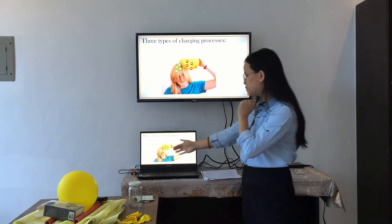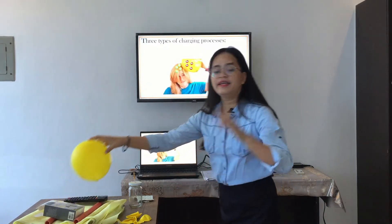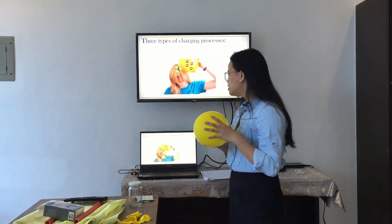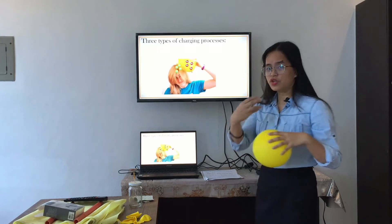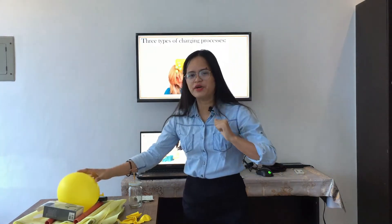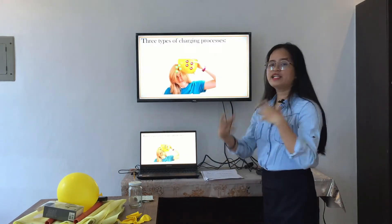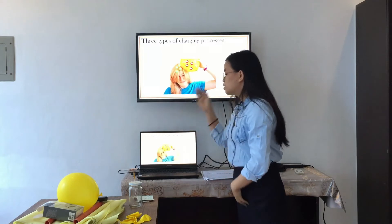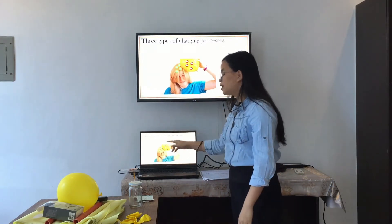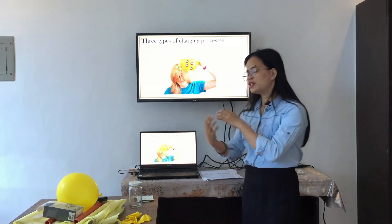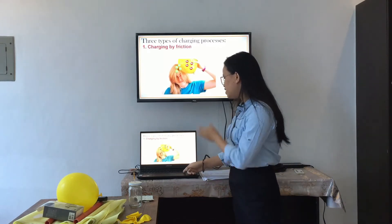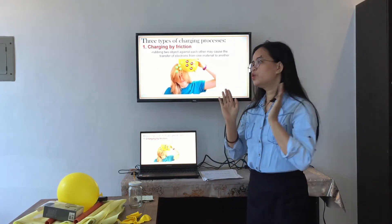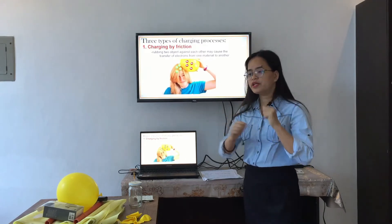Please observe this picture. What is the woman doing? John — the woman is rubbing the balloon against her hair. So what type of charging process takes place? Friction. Very good. Yes, it's friction. Just like heat transfer, that's what we discussed last week. One object gains electrons and becomes negatively charged, and one object loses electrons and becomes positively charged. So, what is friction? Friction involves rubbing two objects against each other.